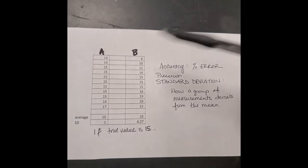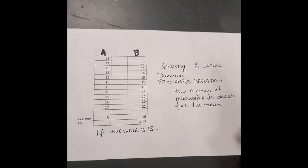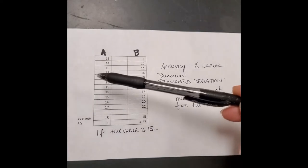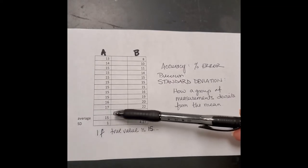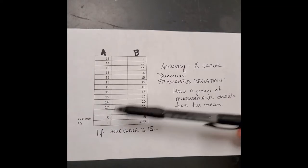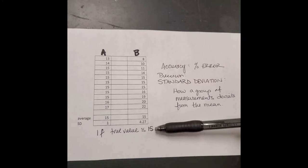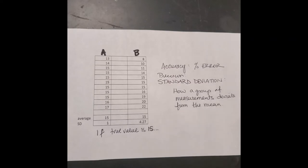If we look at the data for set A and set B — let's say these are masses in grams, where I mass a bunch of different things that should have the same mass. The average for group A is 15 and the average for group B is 15. They both involve 11 data points. If the true value is 15, the percent error for both data sets is zero, so both are accurate.